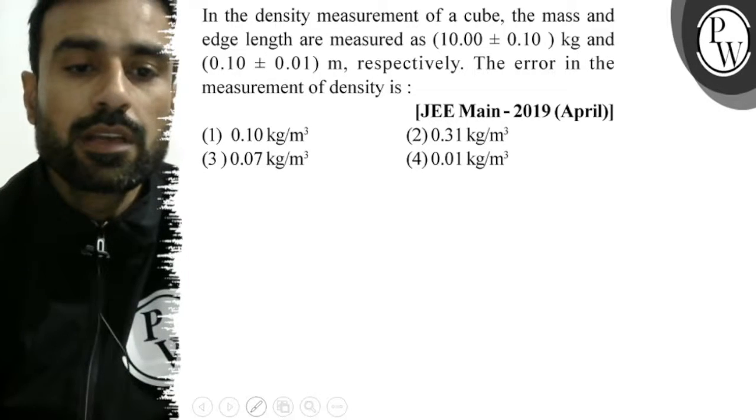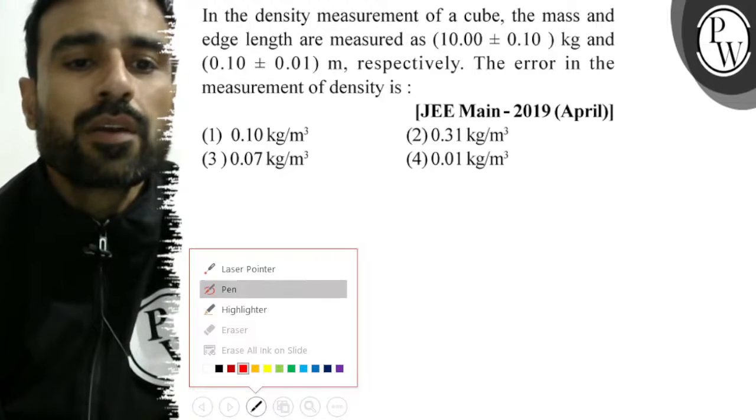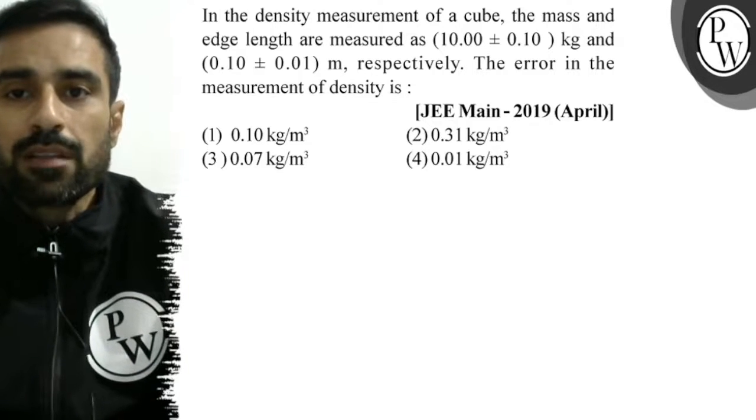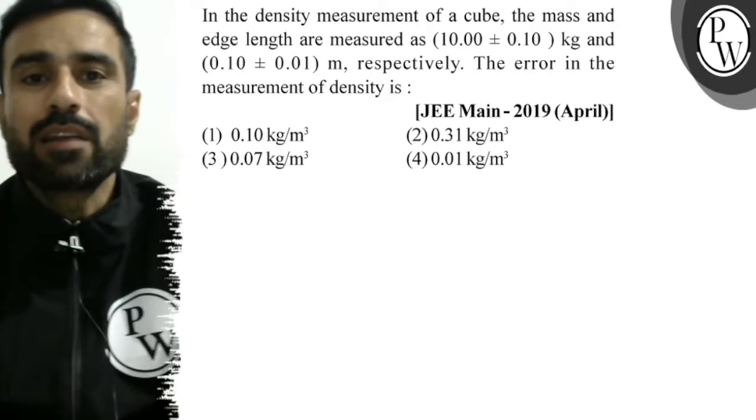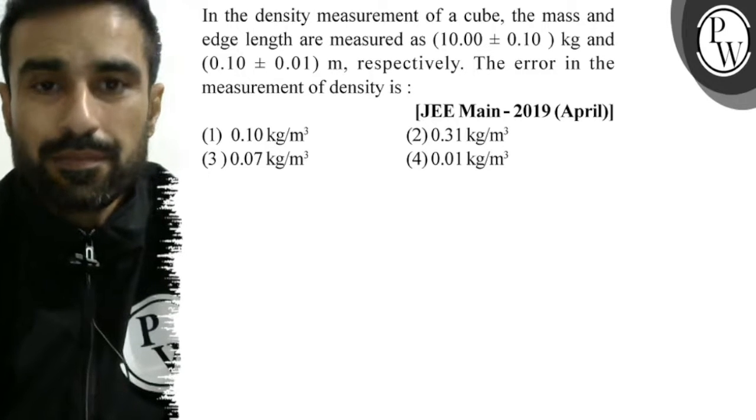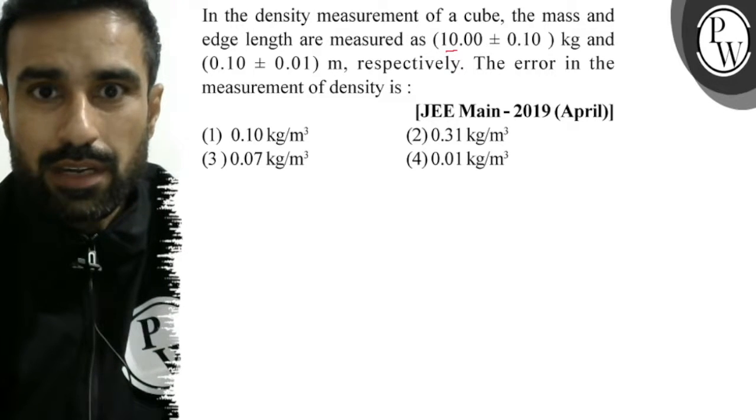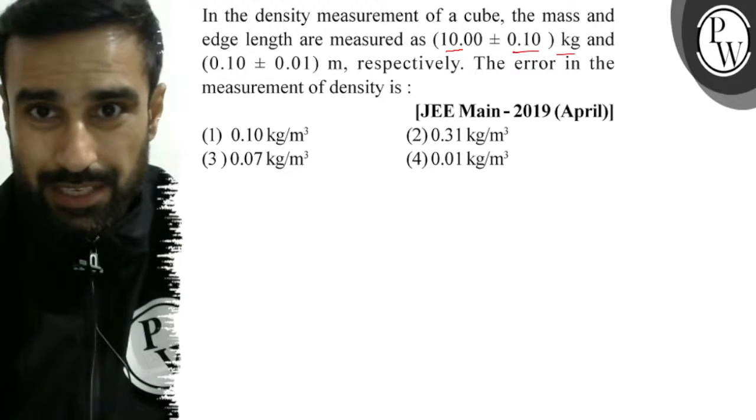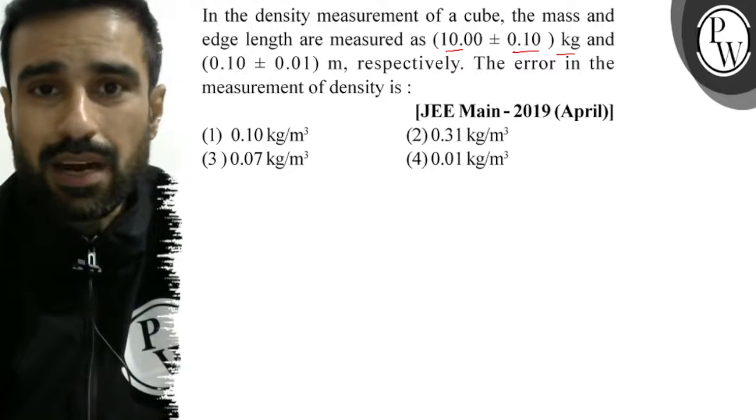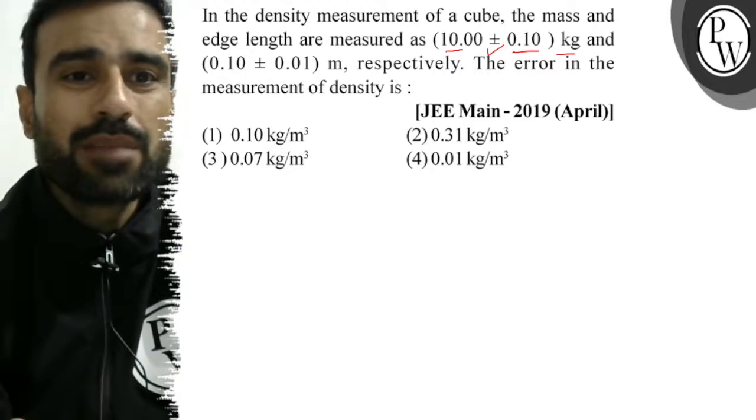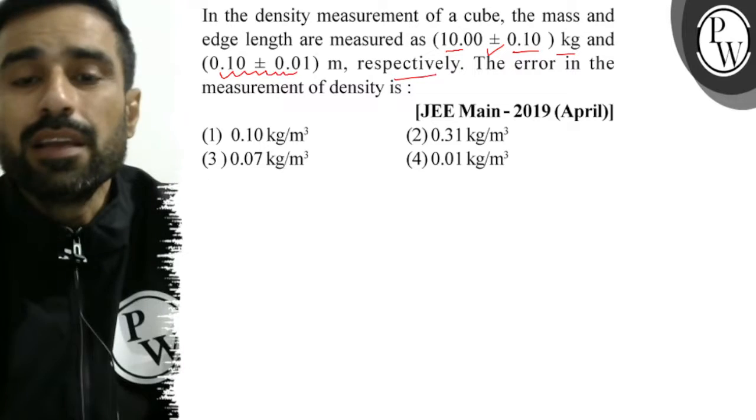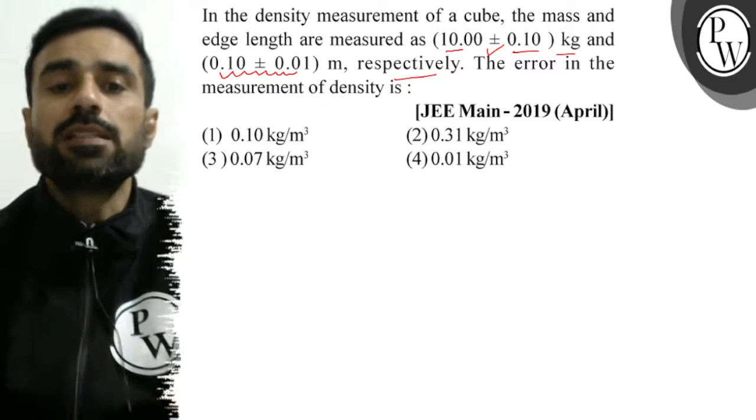Hello, let's go through the question. In the density measurement of a cube, the mass and edge lengths are measured as 10.00 ± 0.10 kg and 0.10 ± 0.01 m, respectively. The error in the measurement of density is?